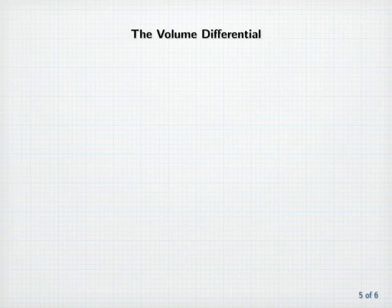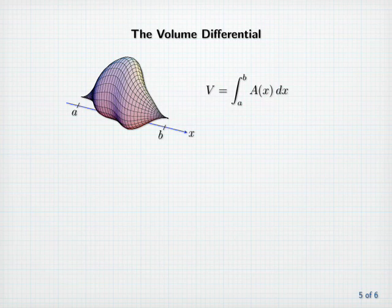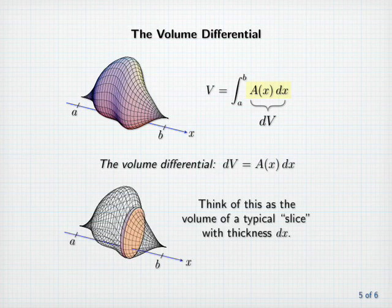The volume differential. We've seen that certain volume calculations can be done by integrating cross-sectional area. The cross-sectional area A of x times dx is a differential, which we'll call the volume differential dV, and it is useful to think of dV as the volume of a typical very thin slice with thickness dx.